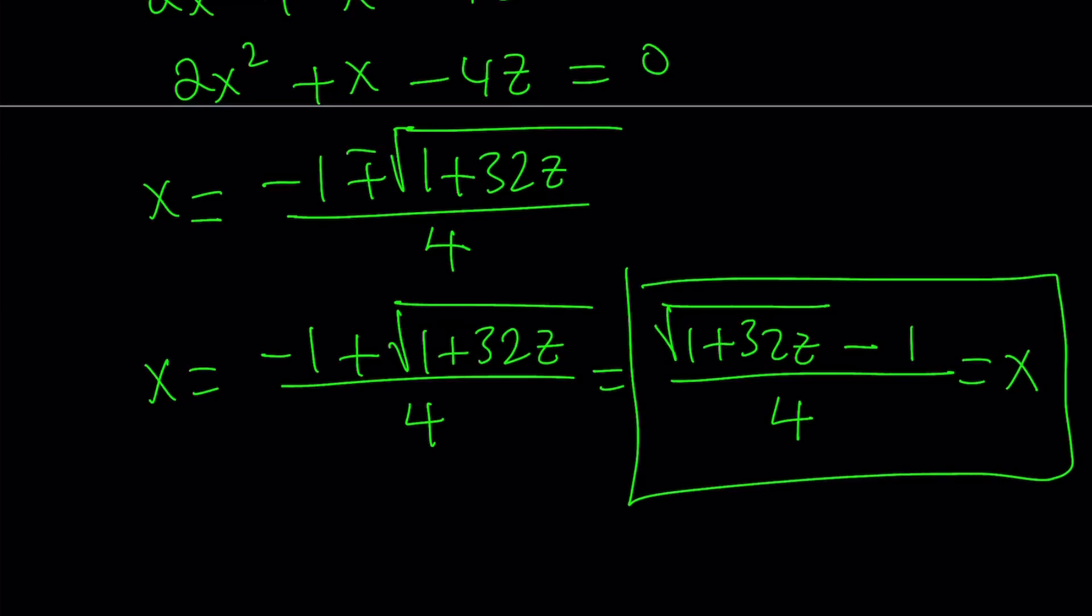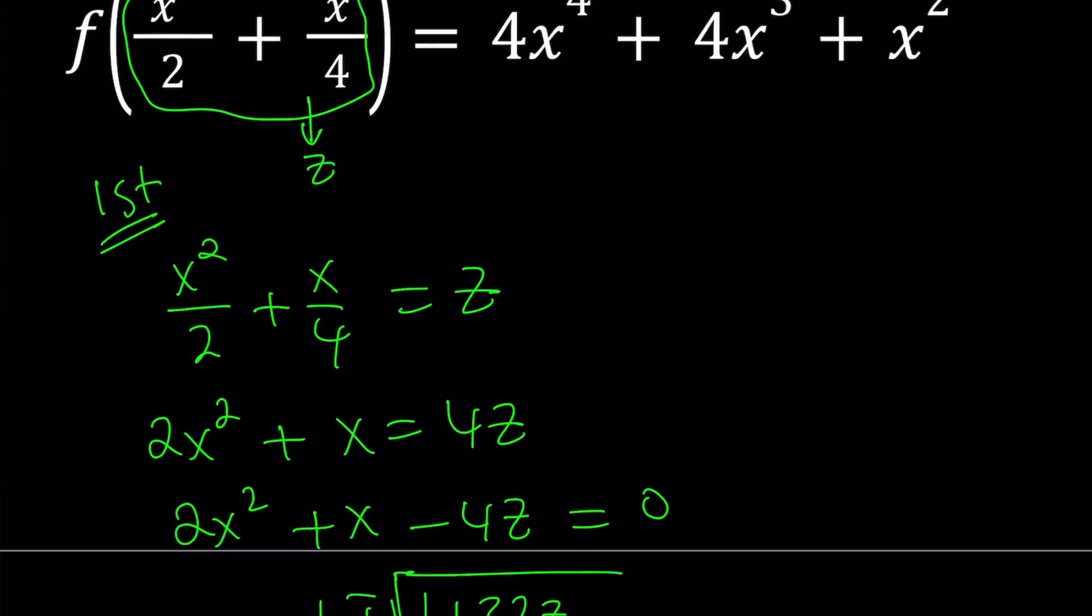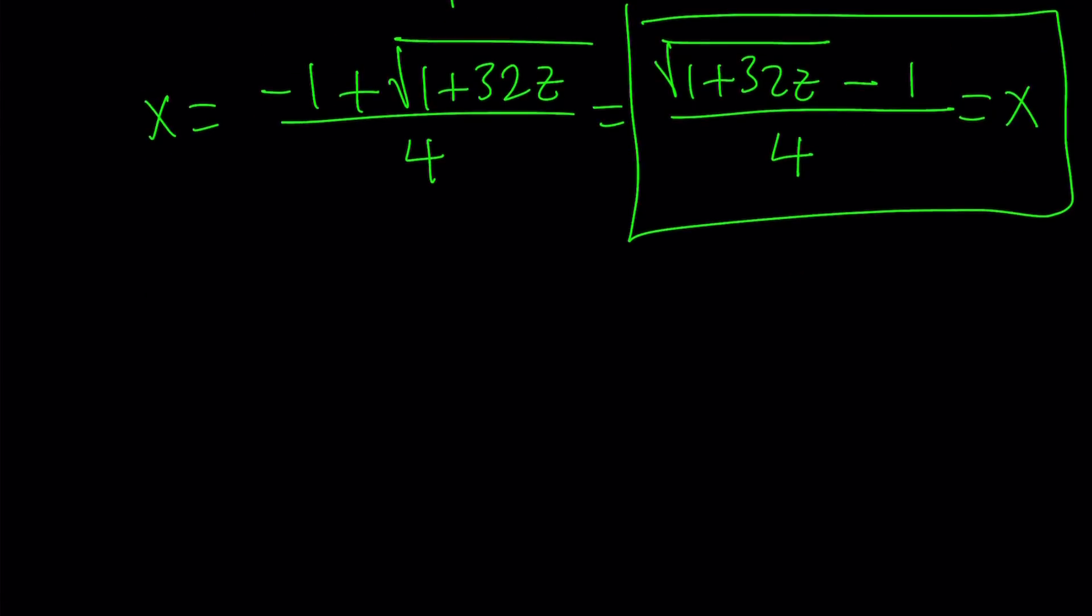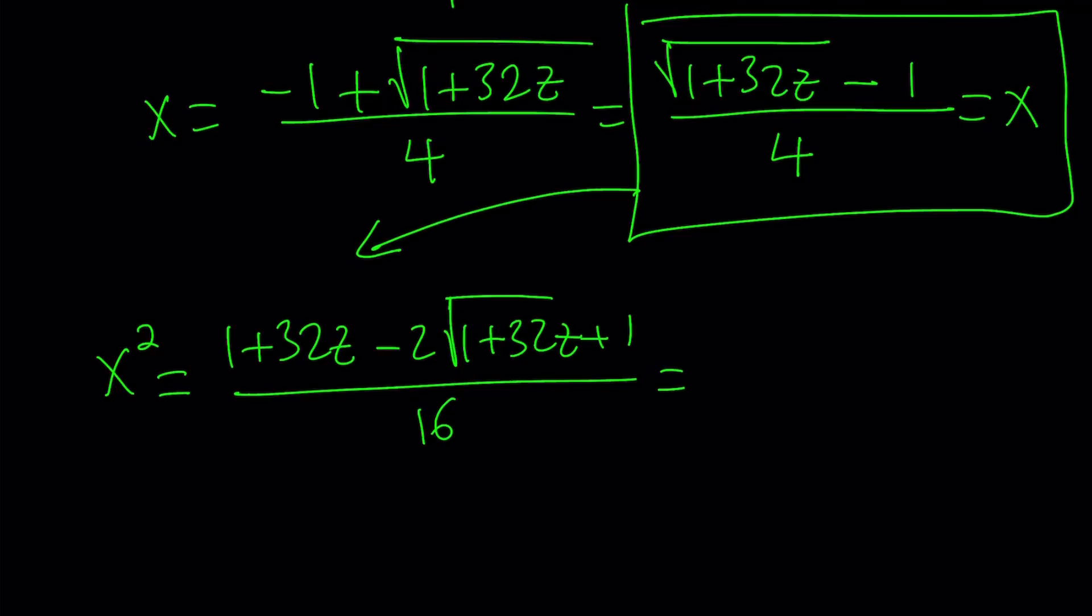I want to use it in my expression on the right hand side. I need x to the fourth, x to the third, and x squared. So we've got a lot of work to do. First, let's square both sides. If you square both sides, you get 1 plus 32z minus 2 times the square root of 1 plus 32z plus 1, all divided by 16. If you simplify and divide the top and bottom by 2, you get 1 plus 16z minus the square root of 1 plus 32z over 8. That's x squared.